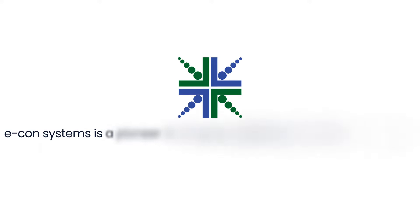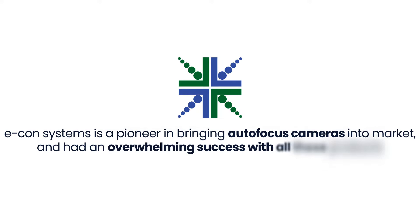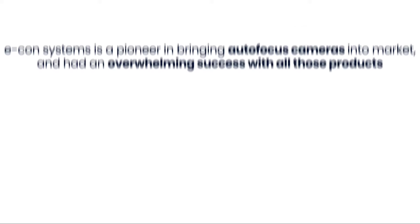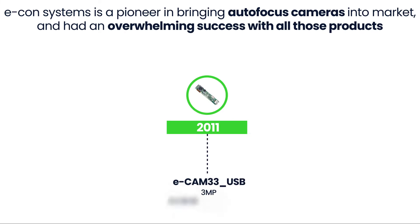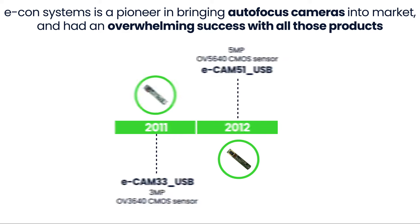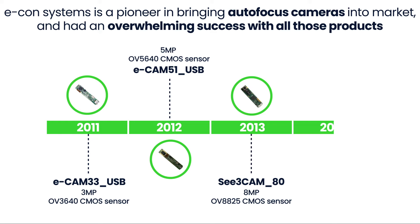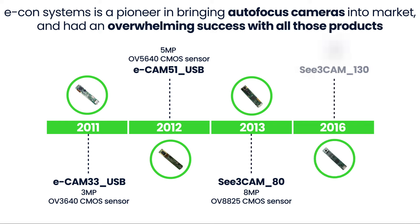Econ Systems has been pioneering in bringing autofocus cameras consistently into the market and has had an overwhelming success with them. Starting with a 3 megapixel camera in 2011, we continued to build our autofocus portfolio by adding a 5 megapixel, 8 megapixel, and 13 megapixel cameras.